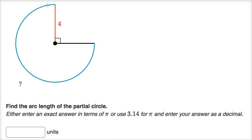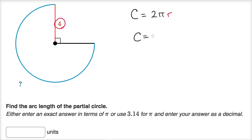You can see this is going three fourths of the way around the circle, so this arc length is going to be three fourths of the circumference. What is the circumference? Well, we know the circumference is equal to two pi times the radius. They tell us the radius is equal to four.